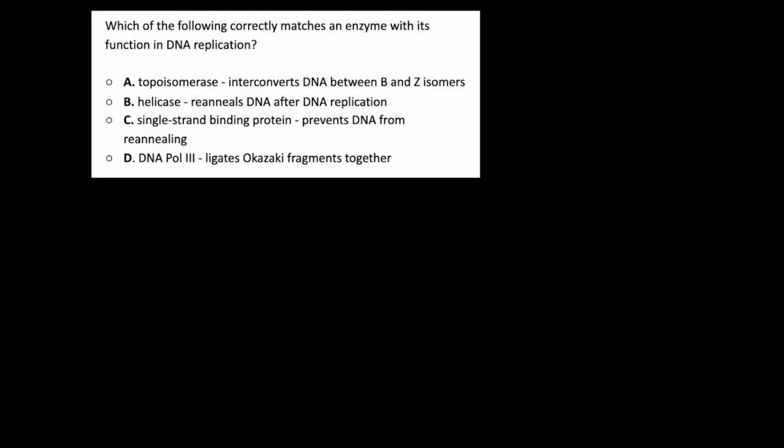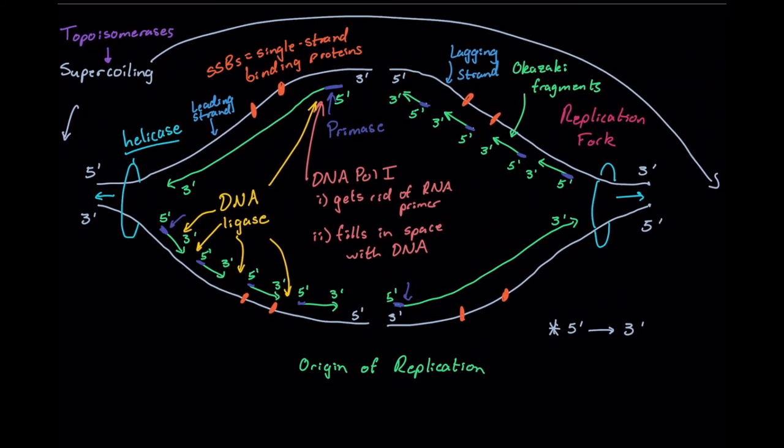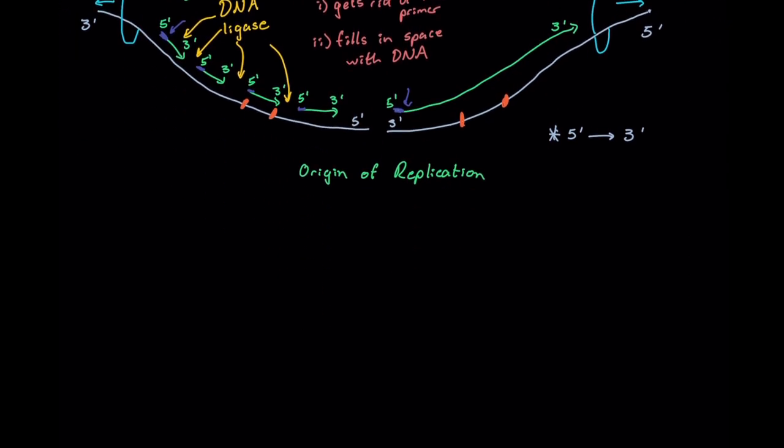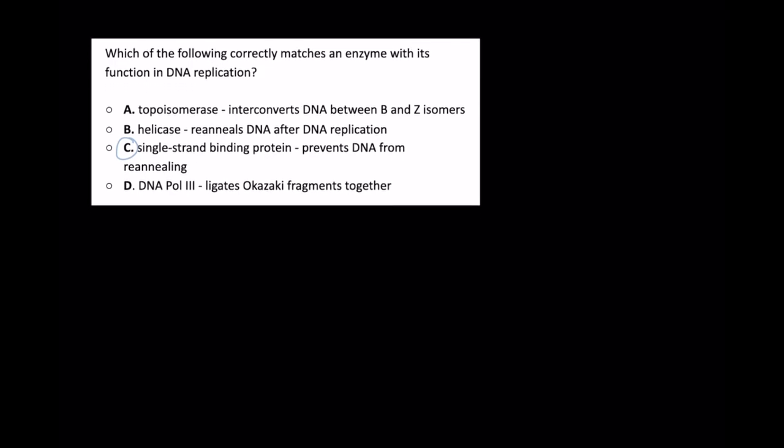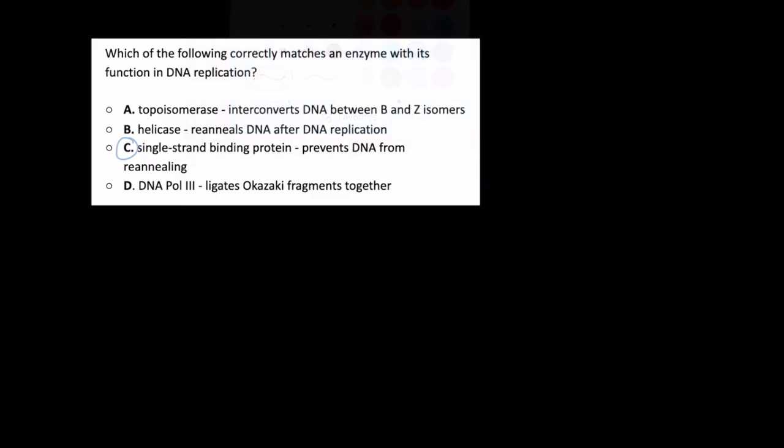To test yourself go ahead and take a look at this AAMC derived practice problem. Assuming you've had a chance to take a look at it and pause the video, let's go through it. The correct answer that we are going to be looking at here will be C and this is what we were taking a look at with our single-stranded binding proteins up here. So in orange we see these single-stranded binding proteins are what are helping this blue strand and this blue strand from re-annealing right after our helicase opens up that DNA. So C will be our correct answer. DNA polymerase 3 is not what ligates Okazaki fragments together. We should know that as of course being DNA ligase's job.